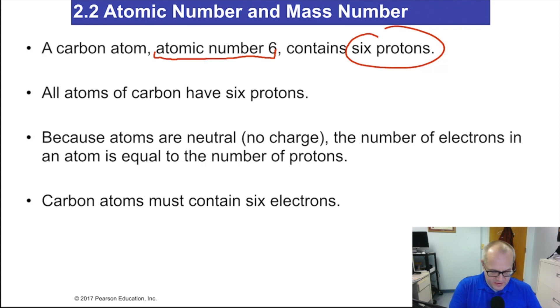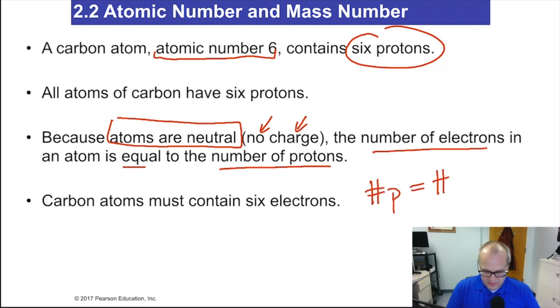Now, here's a fun fact. Atoms are neutral. They have no charge at all. Zero electric charge. So what does that mean? That means the number of electrons must equal the number of protons. The number of protons equals the number of electrons in an atom.